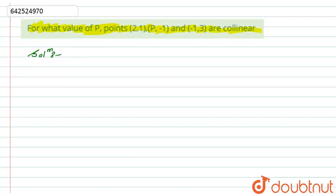Okay, so in the solution, first of all we will write the given points. That is, we have given three points: that is (2,1), then second point is given to us (P,-1).